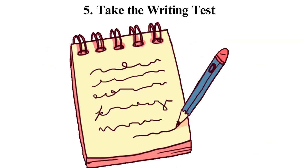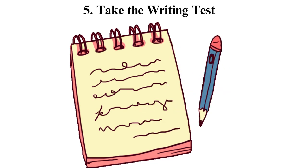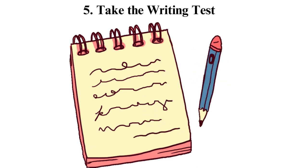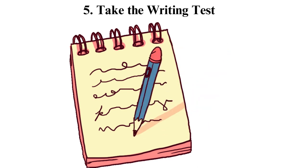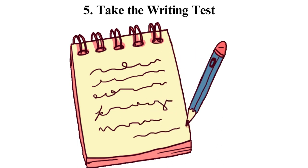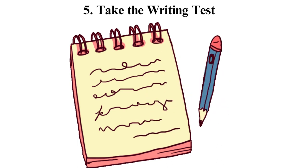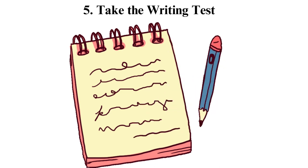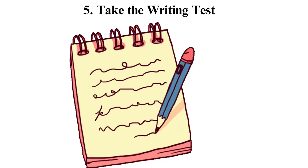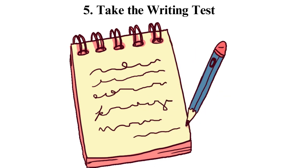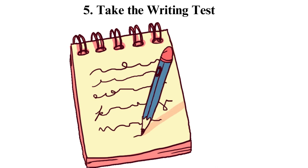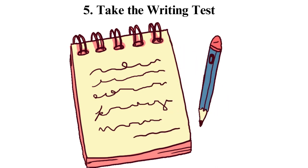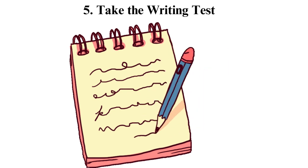Five: Take the Writing test. The ACT writing test involves writing an essay responding to a prompt. The essay prompt typically presents a complex issue or problem and requires the student to analyze and evaluate different perspectives on the issue and develop their position on the topic. The learner has 40 minutes to strategize, write, and correct their written work. Two assessors independently grade the work on a scale of 2 to 12, and the final grade is the average of both grades. This essay exam is not mandatory and does not influence the overall score, but many educational institutions recommend or mandate it as part of the admission procedure.